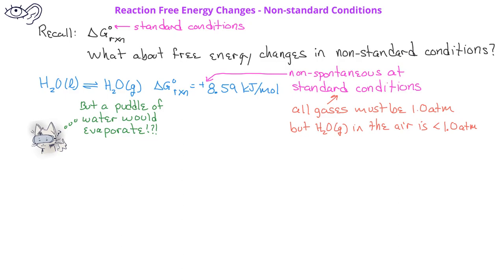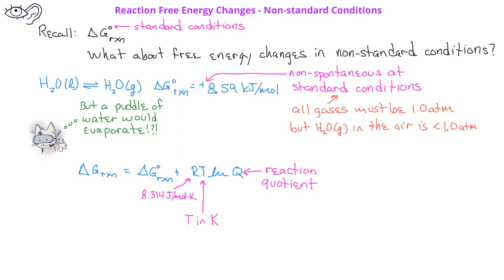This is indicated by a delta G reaction without the superscript zero. The free energy change of a reaction under non-standard conditions is given by the equation: delta G reaction equals delta G reaction under standard conditions plus RT ln Q. The R is the universal gas constant, with a value of 8.314 joules per mole Kelvin. T is the temperature in Kelvin, and Q is the reaction quotient. For reactions only in the gas phase, we'll use Q sub P, whereas for reactions in the aqueous phase, we'll use Q sub C.